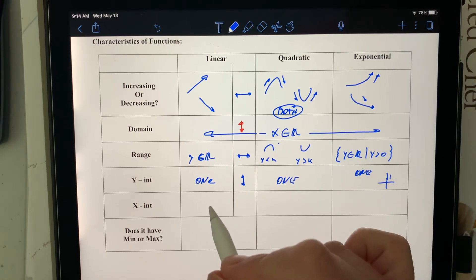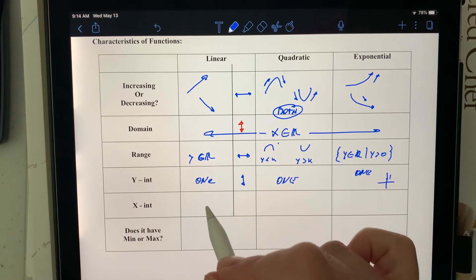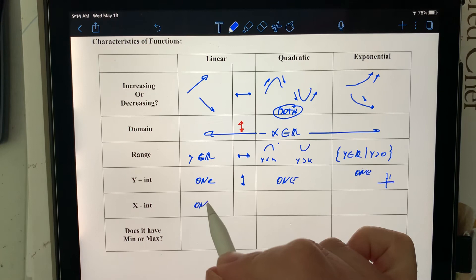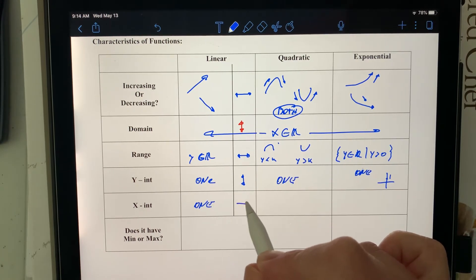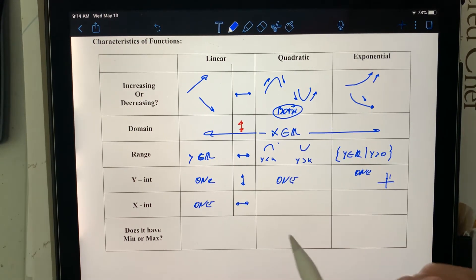X-intercepts. Well, all lines will cross the x-intercept one time except for a horizontal line. And again, if it's above the x-axis, it's never going to cross it. Below the x-axis, it's never going to cross it. If it is the x-axis, it's every single point, infinite x-intercepts, because that's the one.